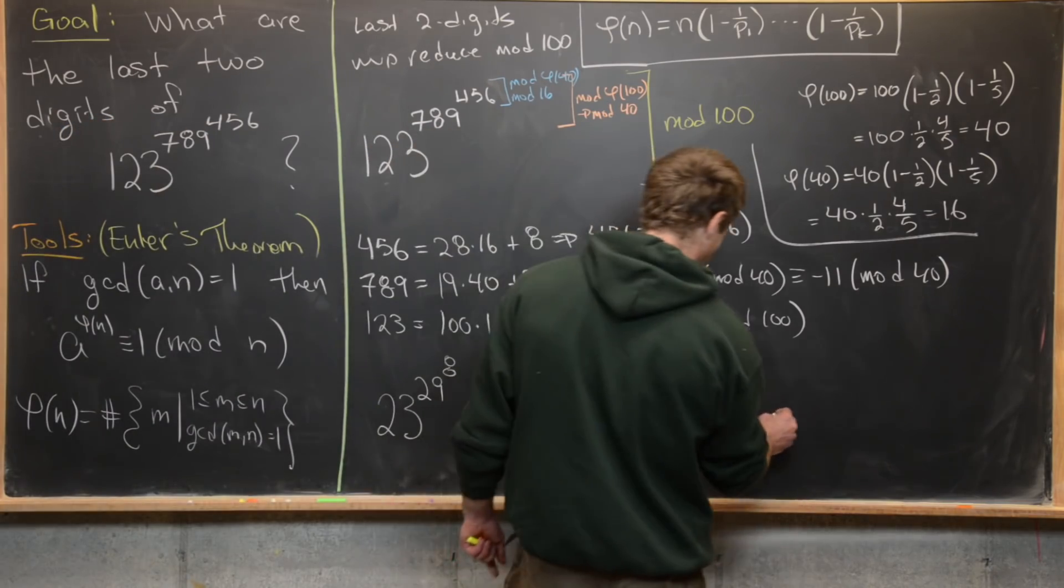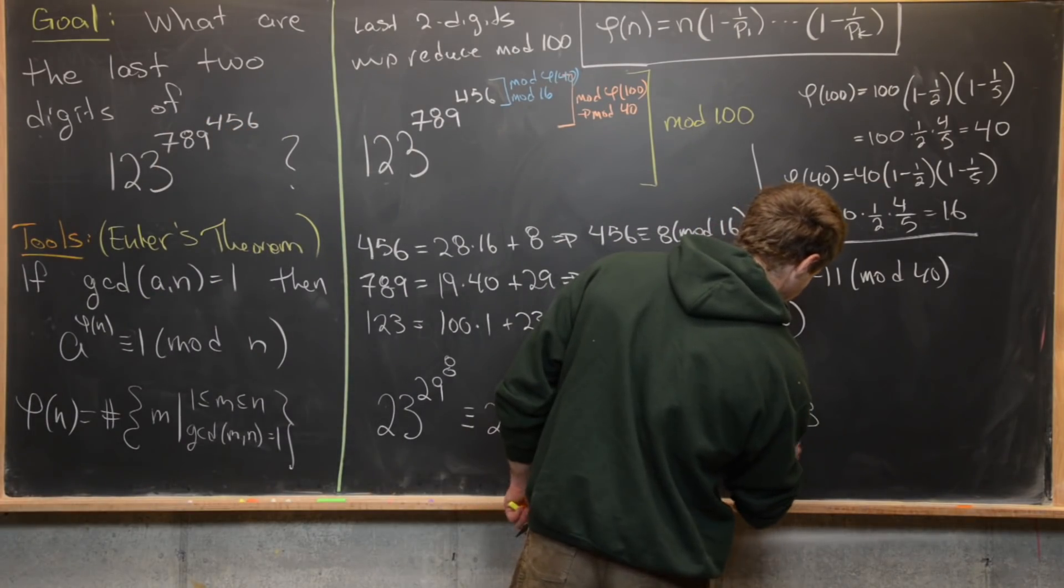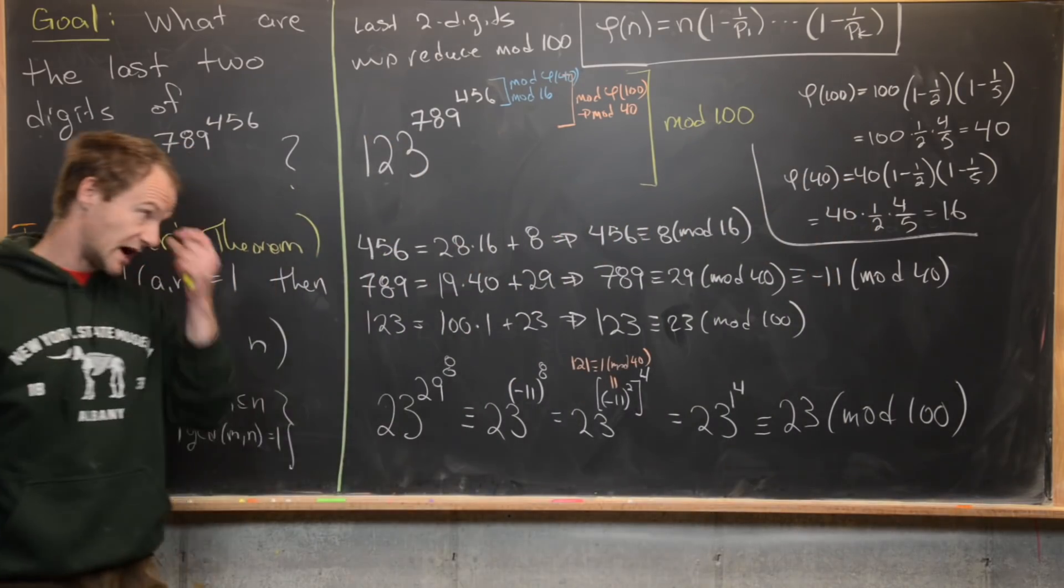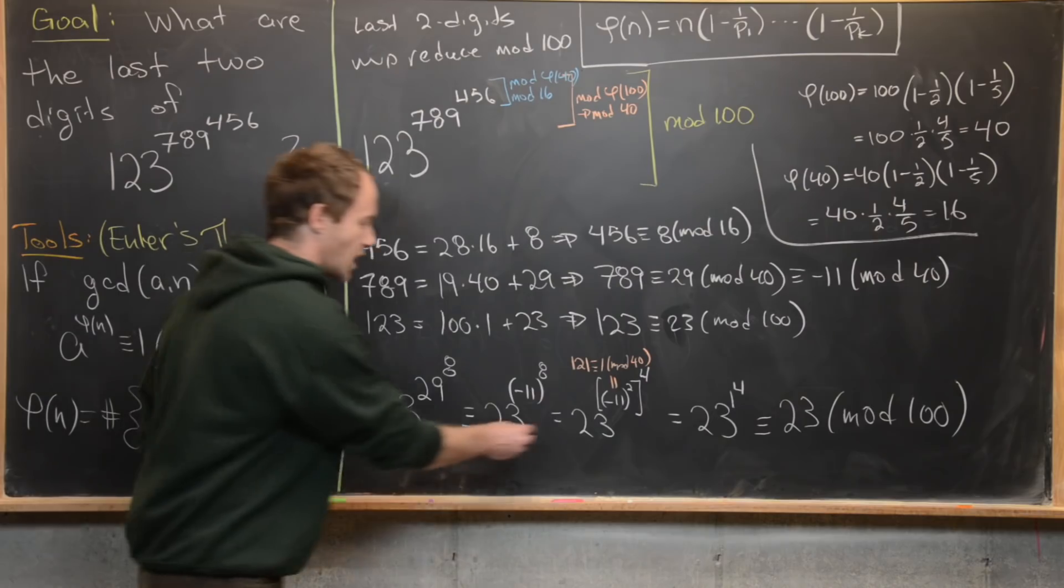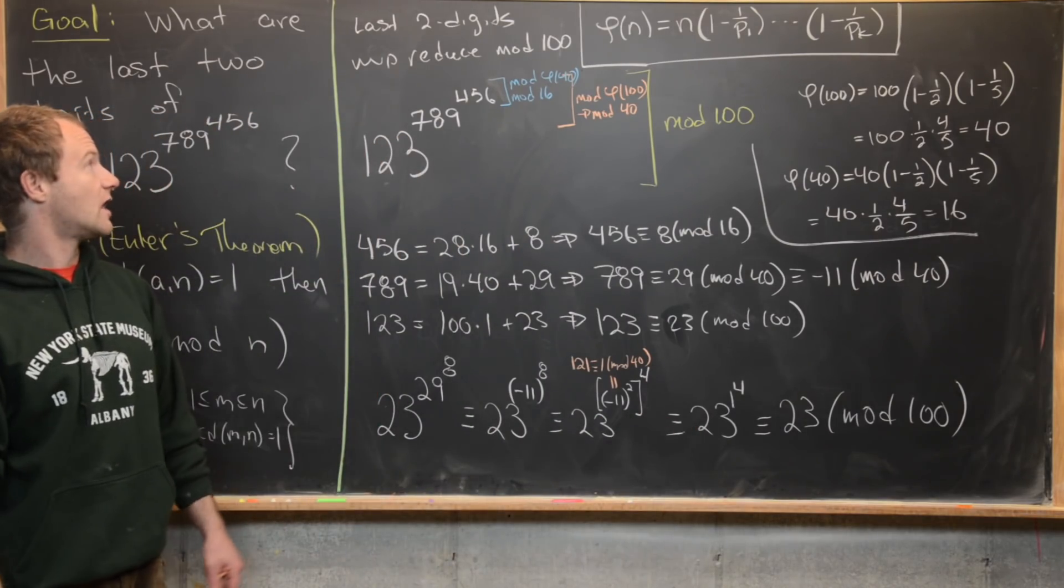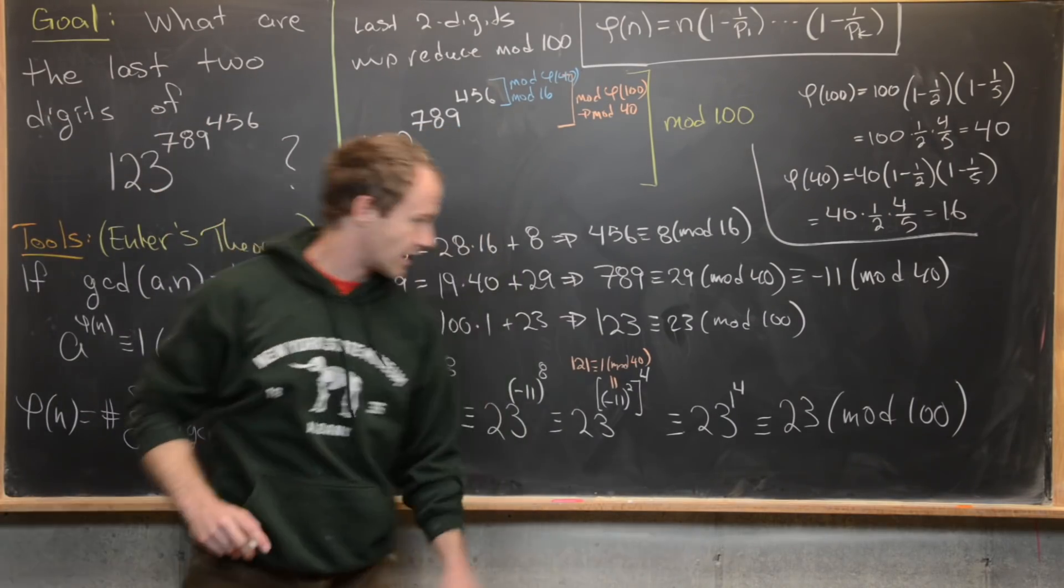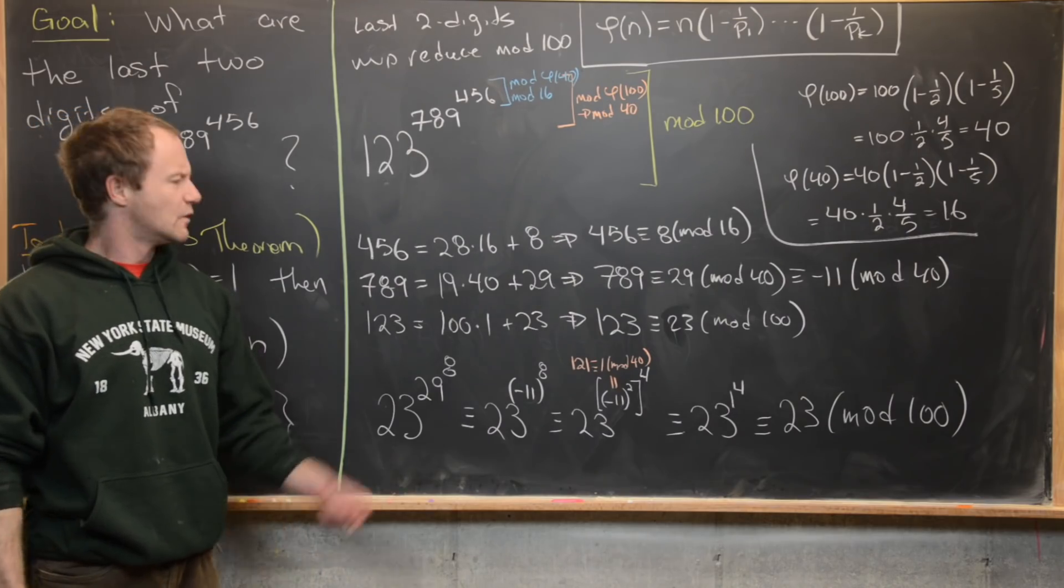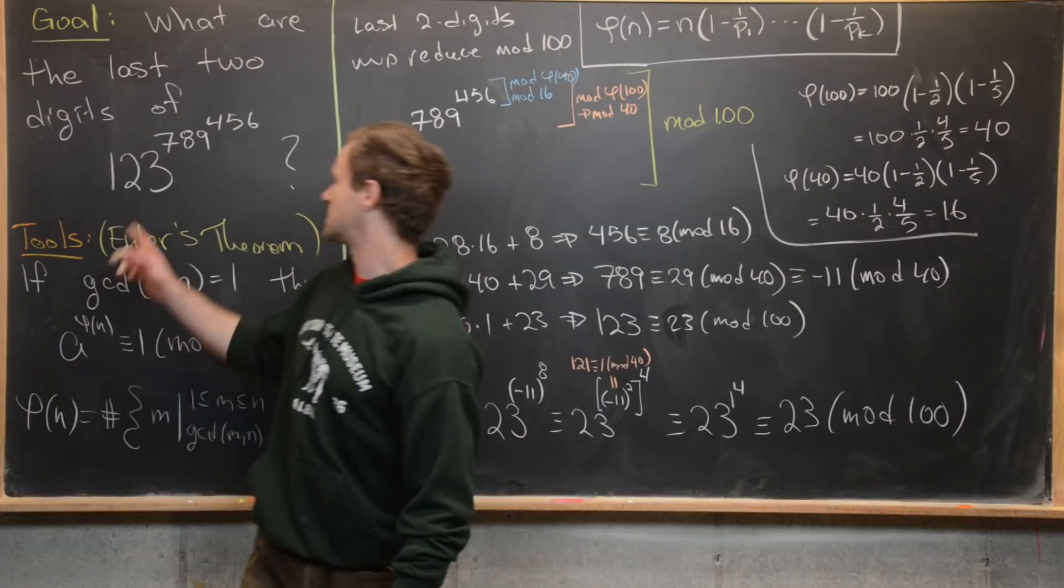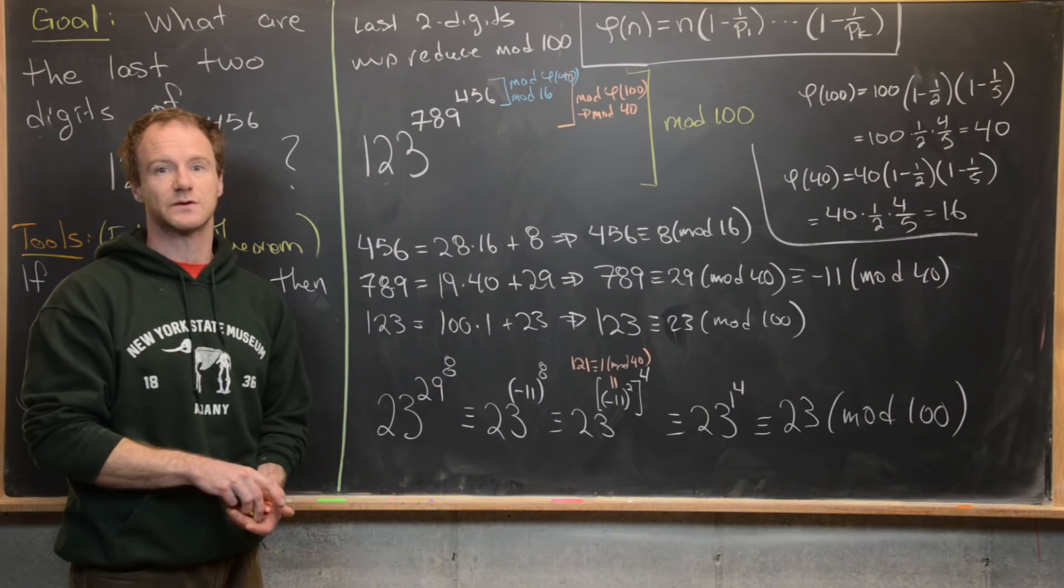But now this part's easy. One to the four is one. So we end up with just 23 to the one. In other words, we have 23. And this is mod 100. So these are not equivalent. These are not equals here. These are congruence modulo 100. So to finish it all off, we have the last two digits of this object right here are just 23, which is maybe not as satisfying as we want it to be because 23 is the same thing as this down here. But that's actually just a lucky happenstance.